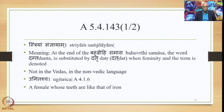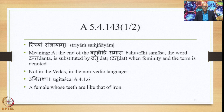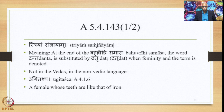Let us go to the next Sutra, 5.4.143, where this Samasanta Adesha continues. The Sutra is Stryam Saudhnyayam. The meaning is: at the end of the Bahuvrihi Samasa, the word Danta is substituted by Duttru — that is Dutt — when feminity and the term Saudhnyaya is denoted. Obviously this Sutra does not apply to the language in the Vedas; it rather applies to the non-Vedic language.